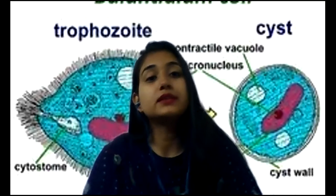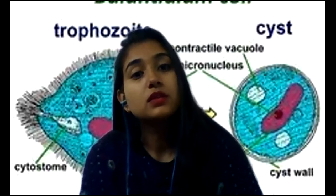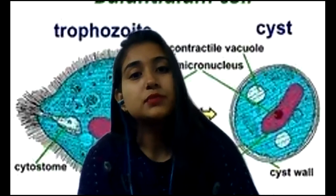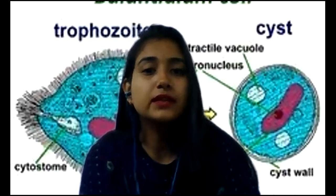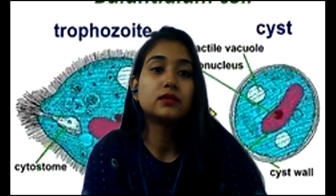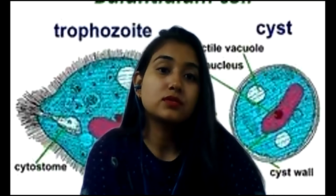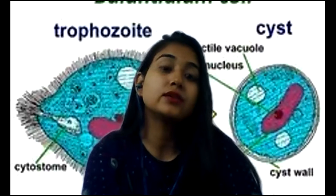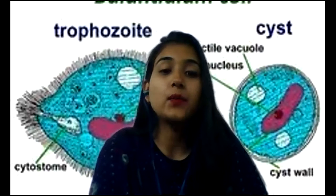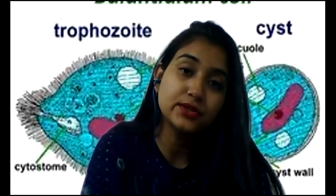Chronic disease involves periods of increased bowel movement with mucous and occasionally bloody stools, alternating with periods of constipation. The parasite load is less in chronic cases and requires repeated stool examination for diagnosis.